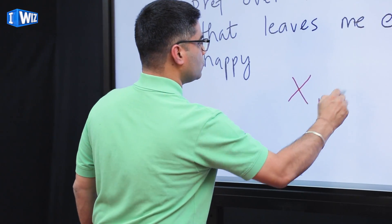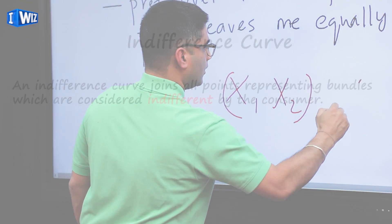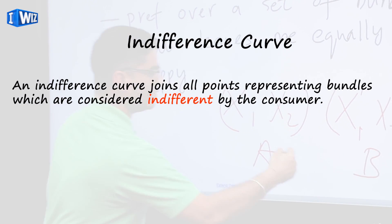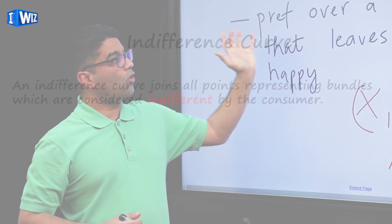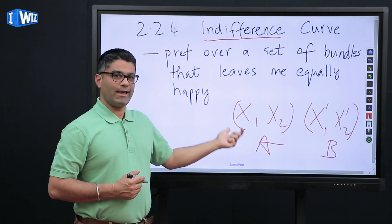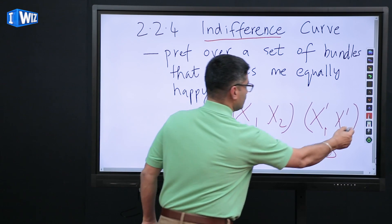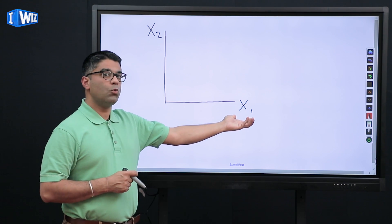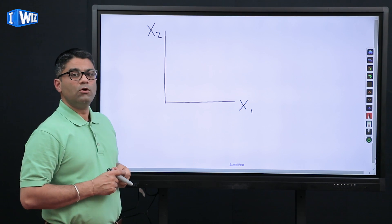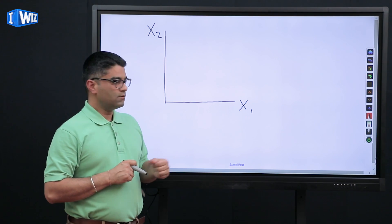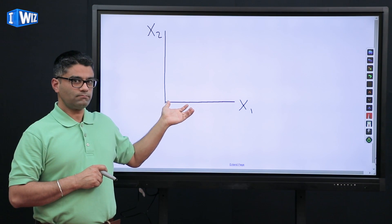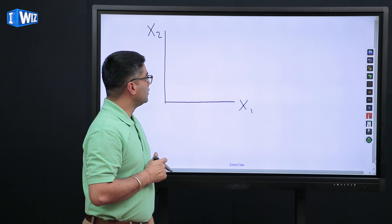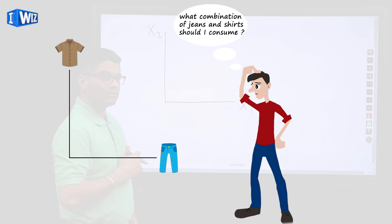So if I have two bundles x1, x2 and another one x11, x21 — if we are looking at two bundles A and B — we are going to look at all the bundles across which we are equally happy and represent that graphically. The space we use has x1 (units of good one) on the x-axis and units of good two on the vertical axis. We've already drawn budget sets using this space, and now we're going to look at consumer preferences on this graph.